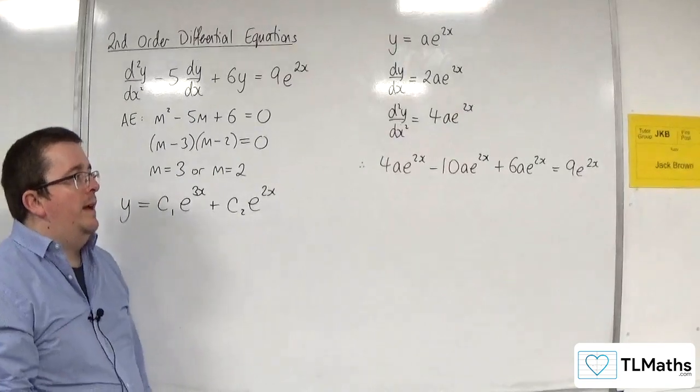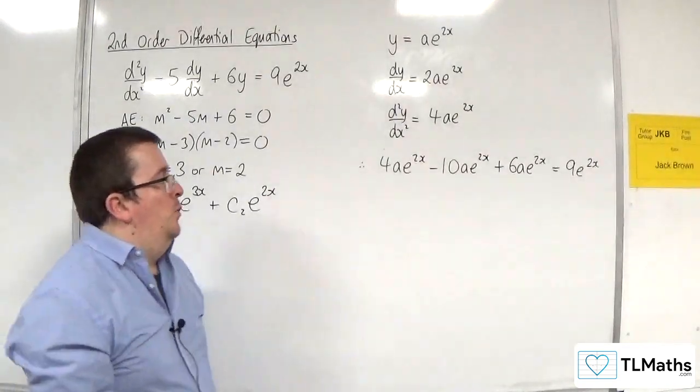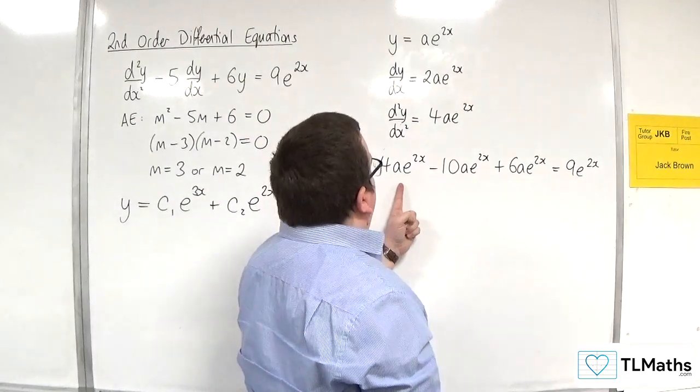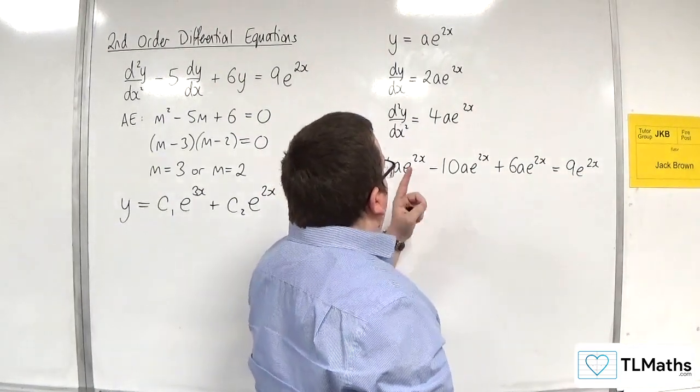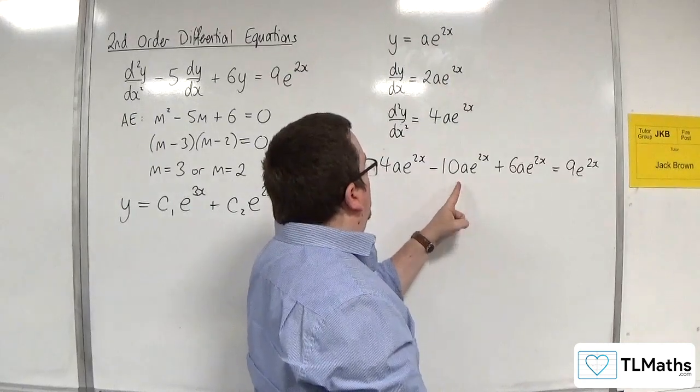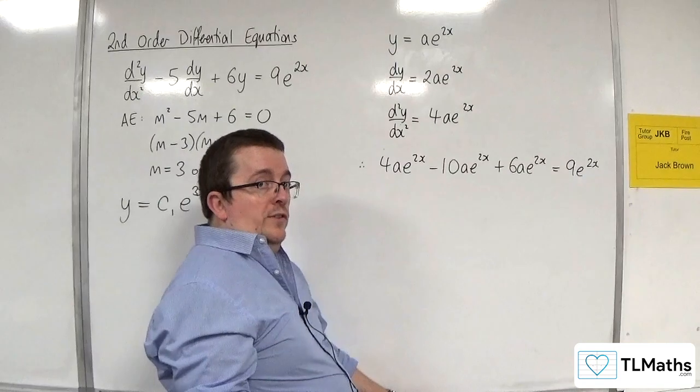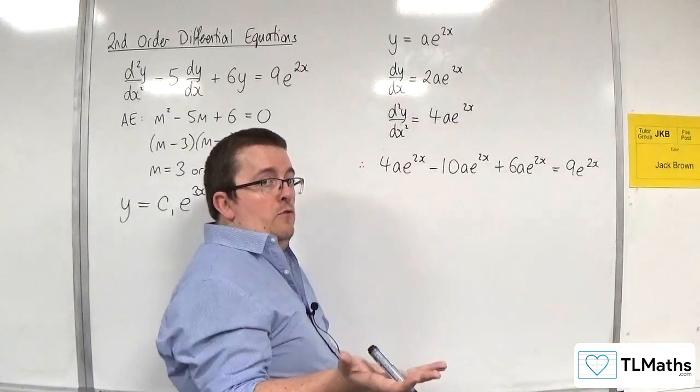So we get 4ae to the 2x take away 10ae to the 2x plus 6ae to the 2x, which is equal to 0.